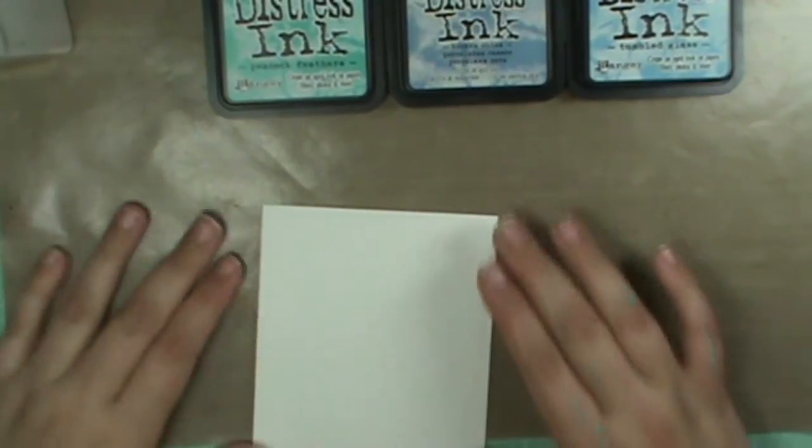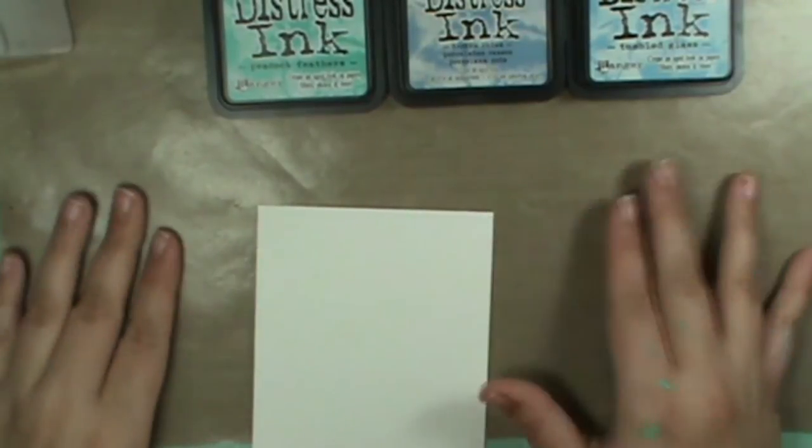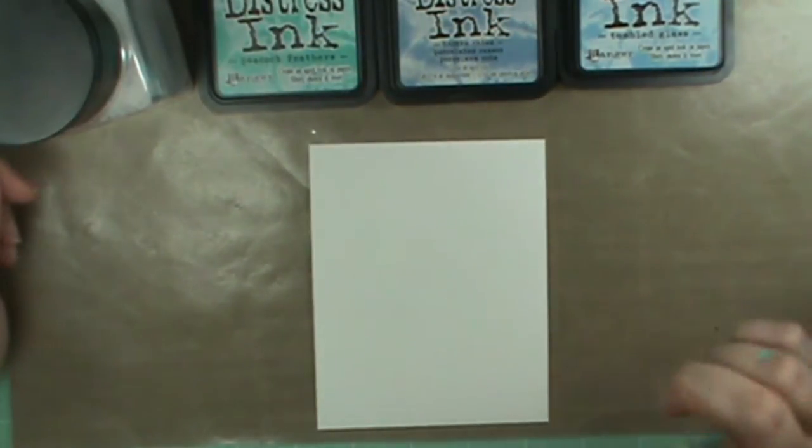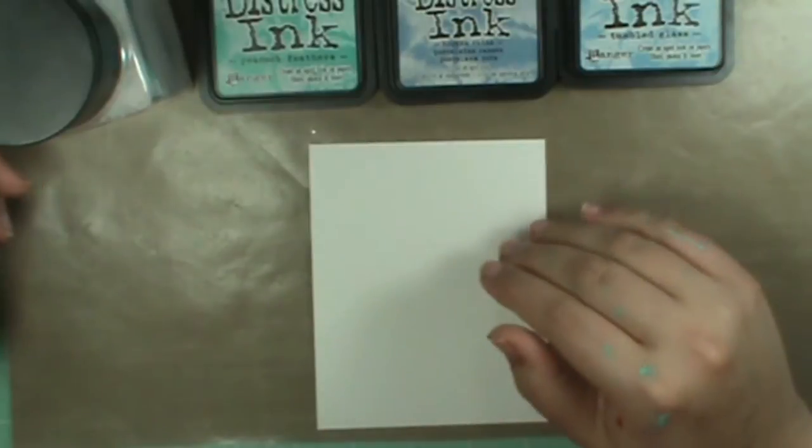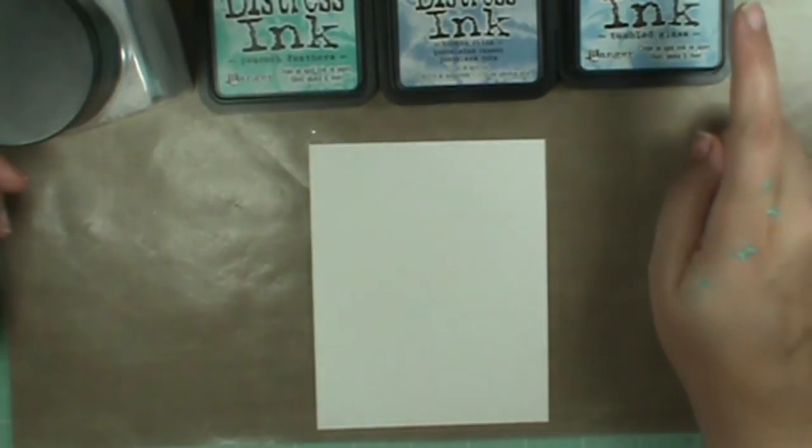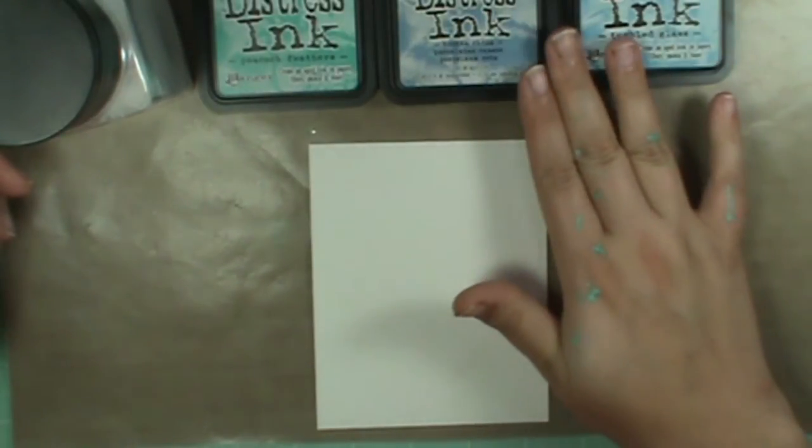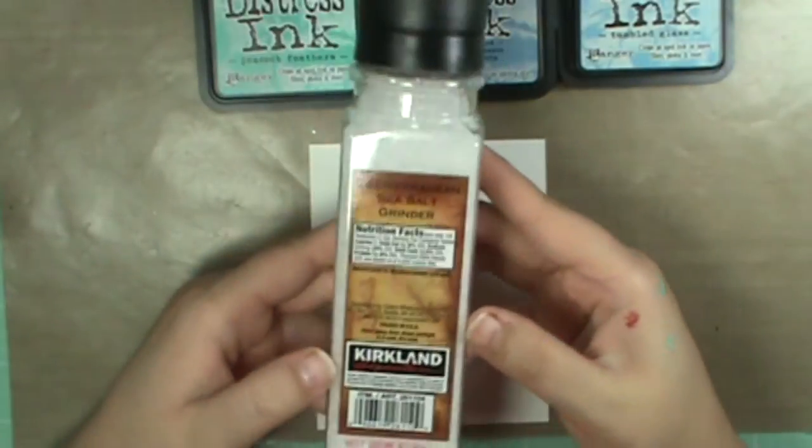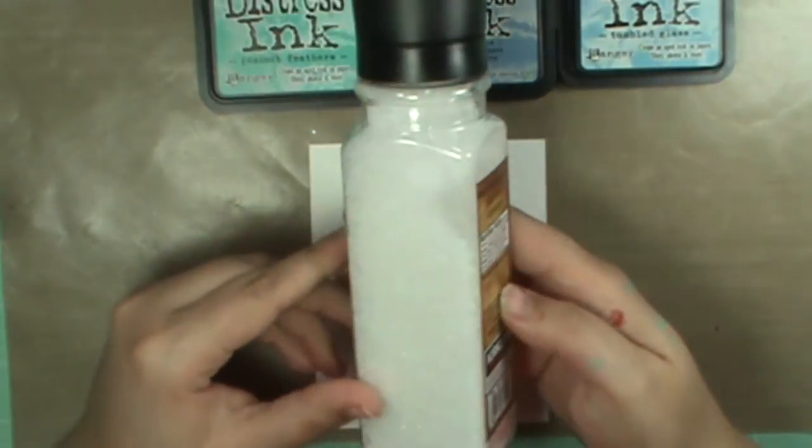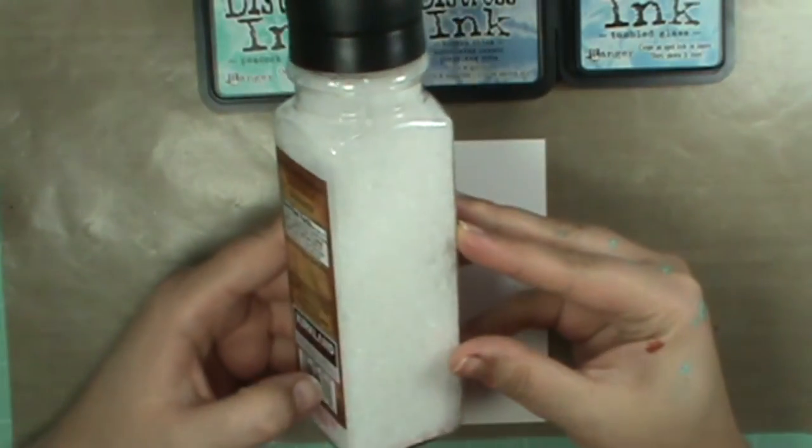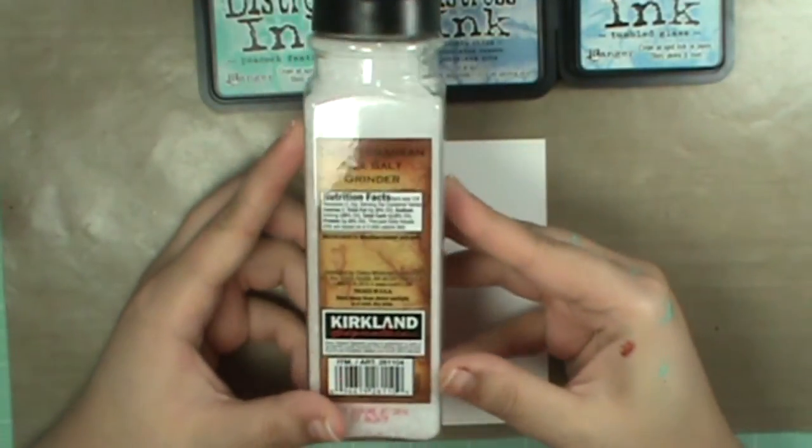Hey everyone, today I'm going to show you a really cool technique. You're going to need some ink, and you can use any ink you want for this. I am using distress inks. Then you're going to need some salt. This is sea salt, but you can also use finer table salt if that's what you choose to do.